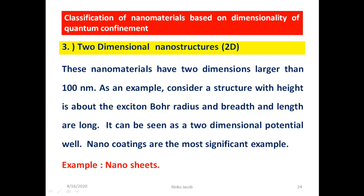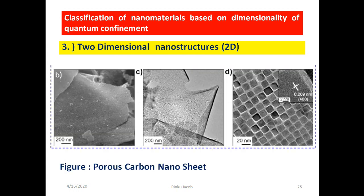The third type is 2-dimensional nanostructures. These nanomaterials have 2 dimensions larger than 100 nanometers. For example, a structure with height about the exciton Bohr radius and breadth and length in micrometers — seen as a 2-dimensional potential well. An example is a nanosheet. The figure shows the image of carbon nanosheets.